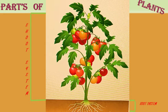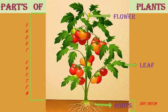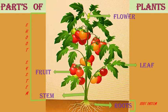Parts of plant — there are different parts of plant. First one is flower (isse hum Hindi mein phool kehte hain). Second one is leaf (isse hum patta kehte hain). Third one is root (isse hum jad kehte hain). Fourth one is stem (isse hum tanah kehte hain). And fifth one is fruit (isse hum fal kehte hain). Parts of plant divide into two parts.